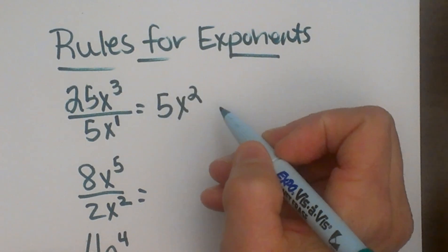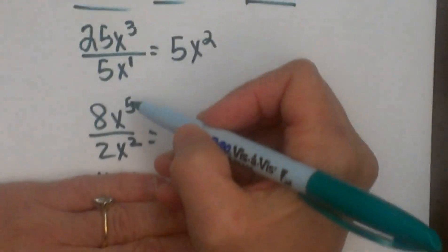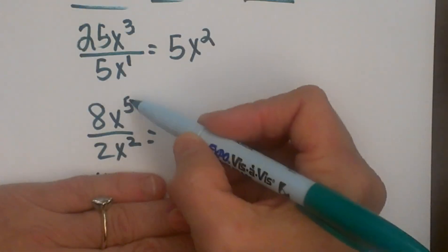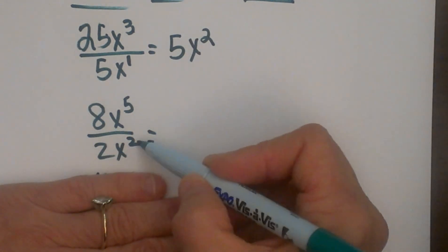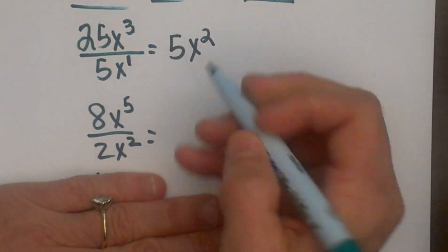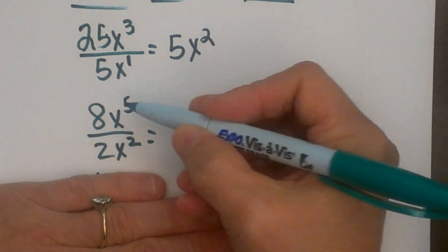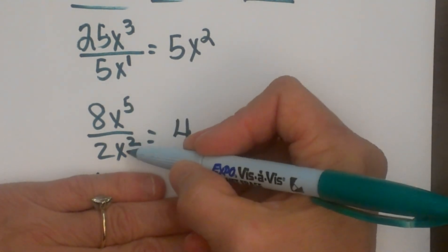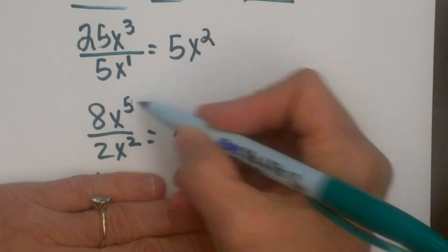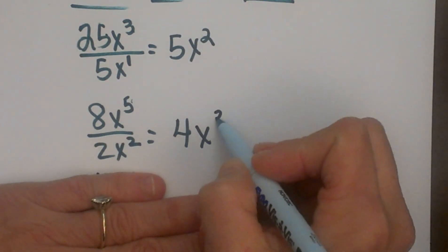So that divides, both of those divide nice and evenly. Okay, let's look at a second example. So we have 8x⁵ divided by 2x². Divide the coefficients, so 8 divided by 2 is 4, and then x⁵ divided by x² and you subtract the exponents, so that is x³.